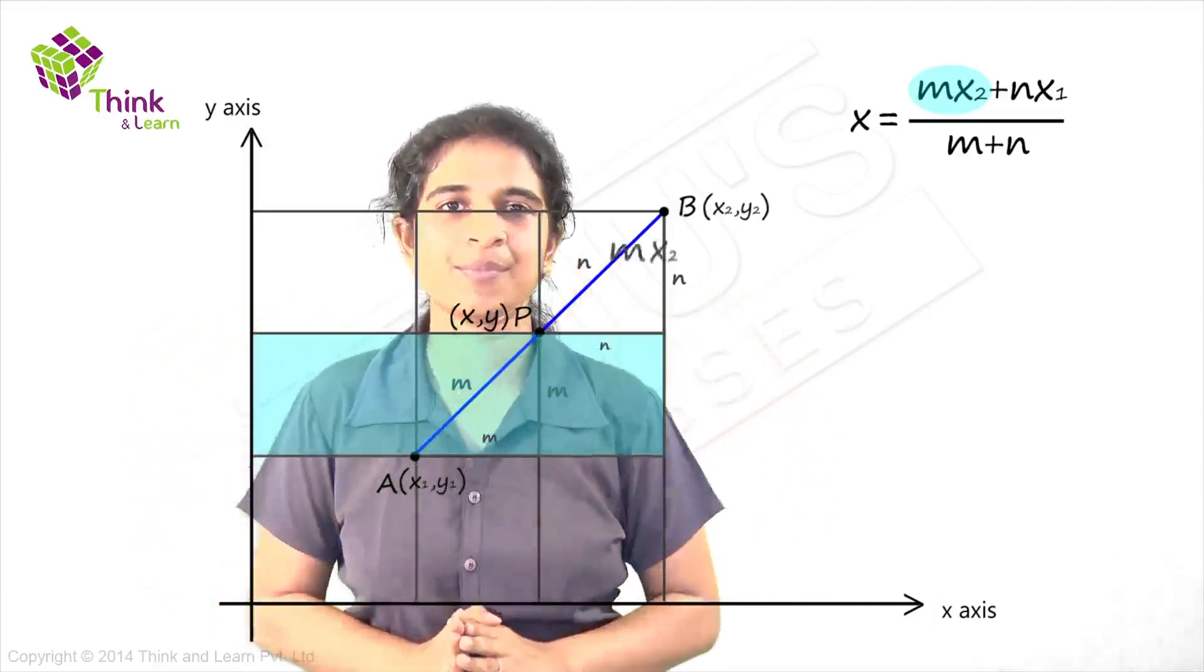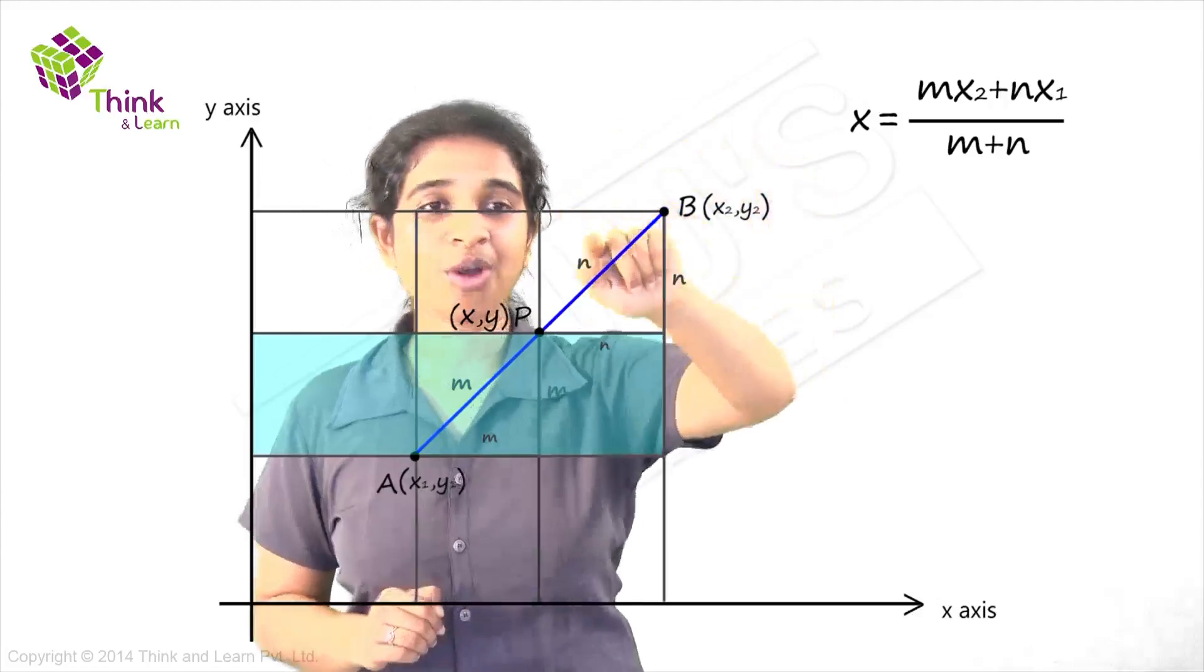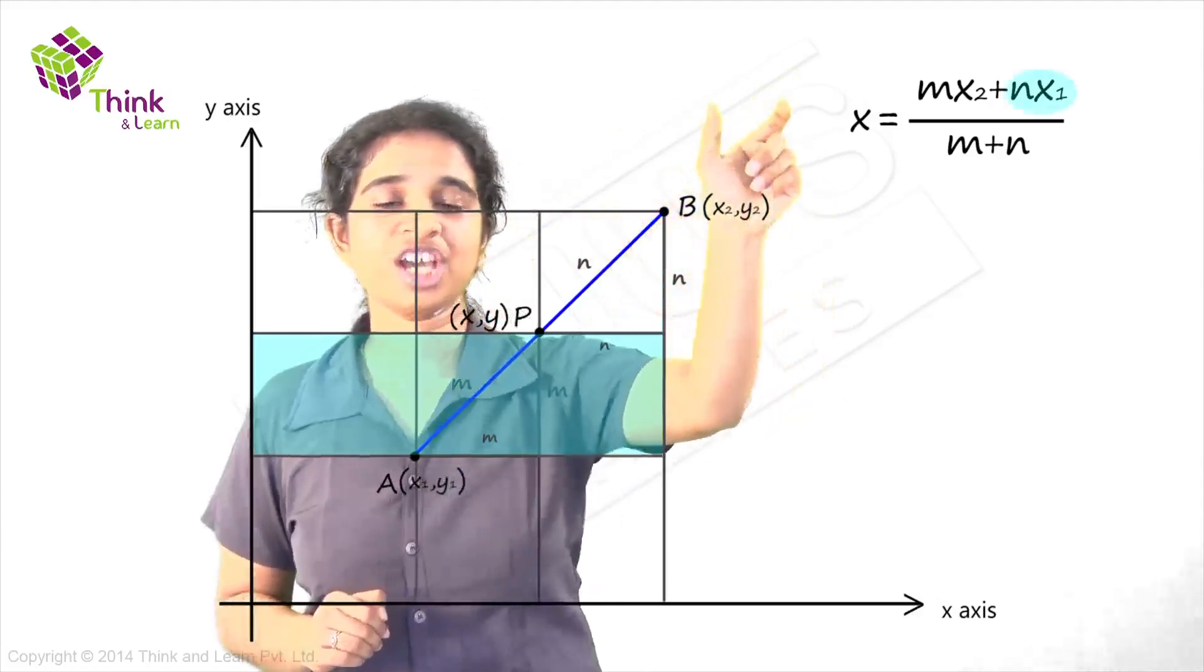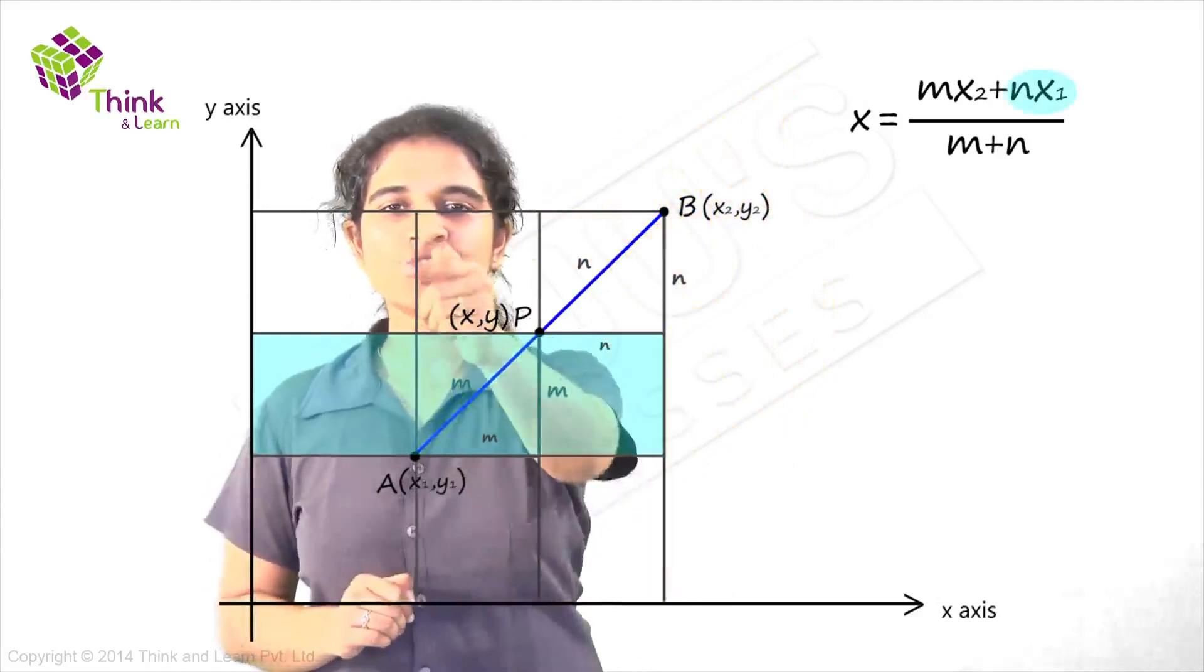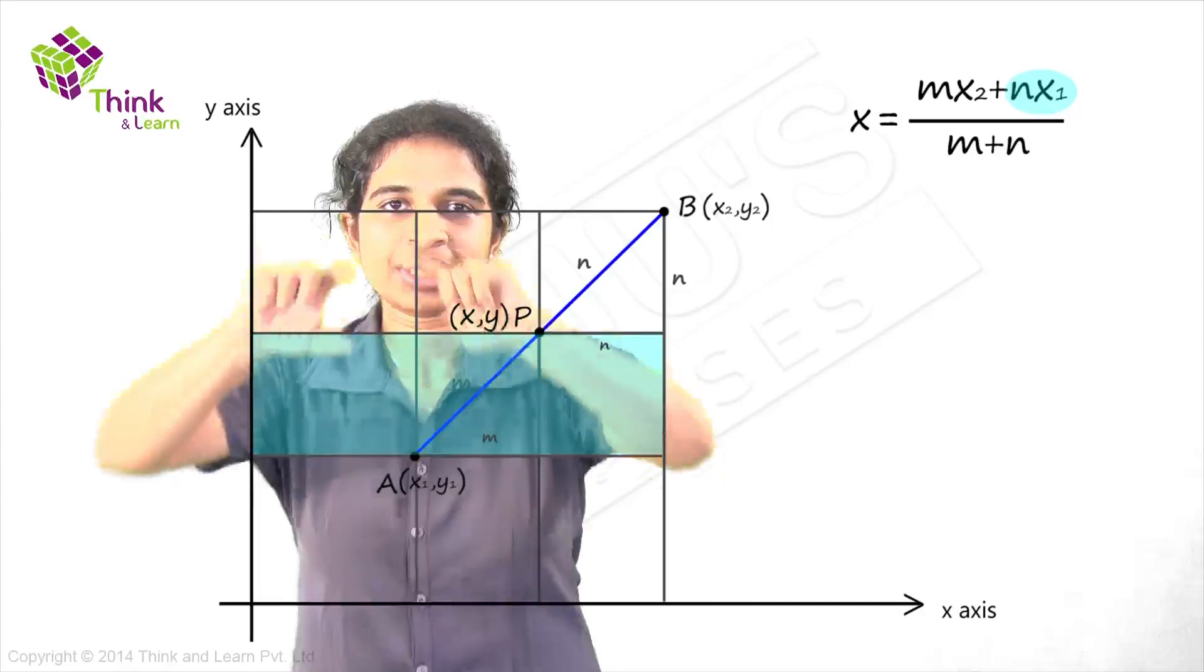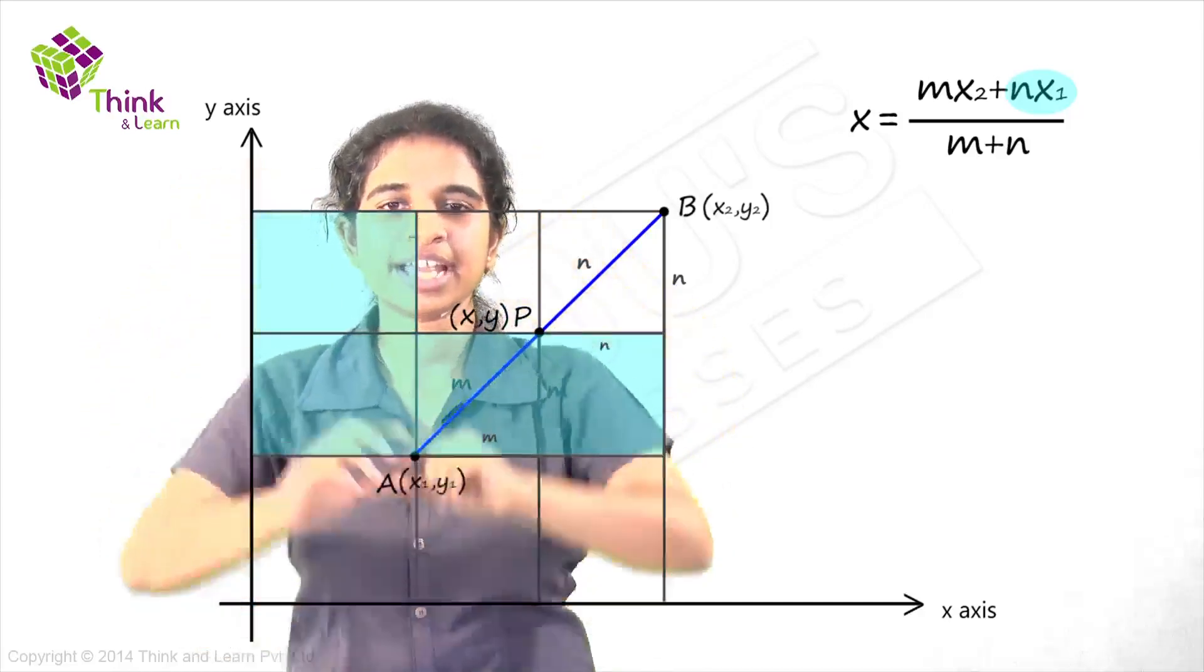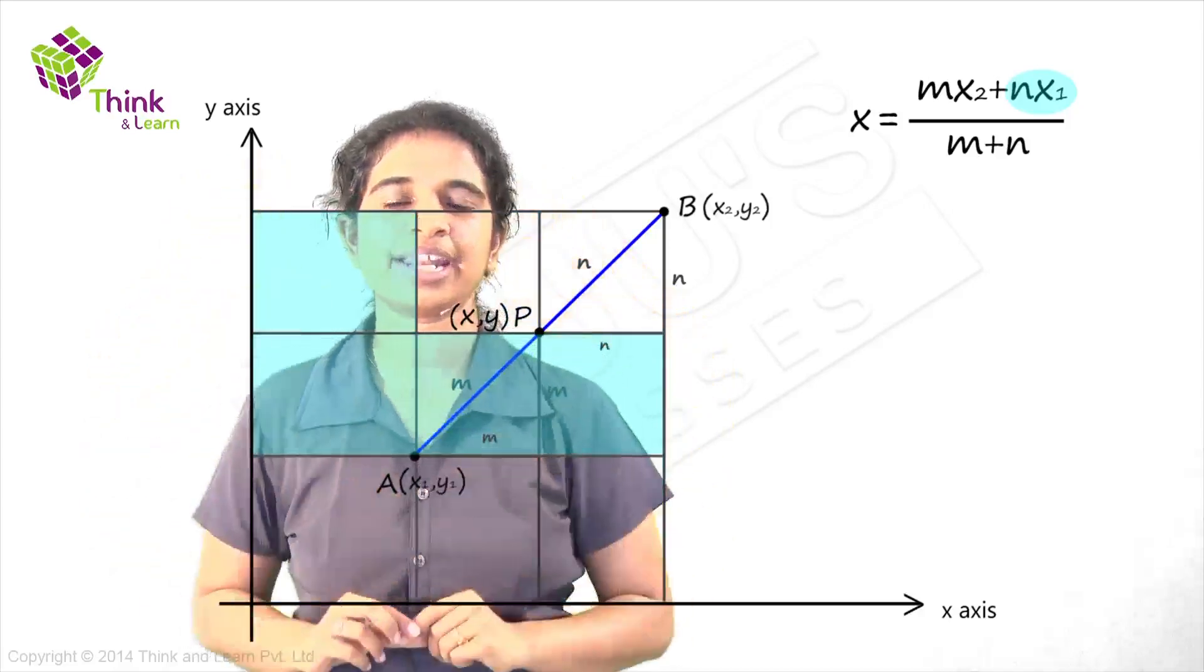We have this area mx2. Now we need to add another value to it, nx1. Can you visualize nx1 on this diagram? Area of this small rectangle is nothing but nx1, because this distance is n and this is x1.